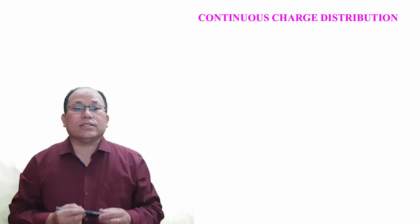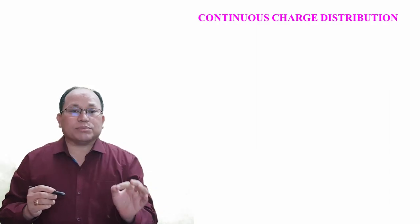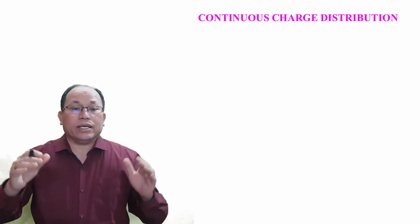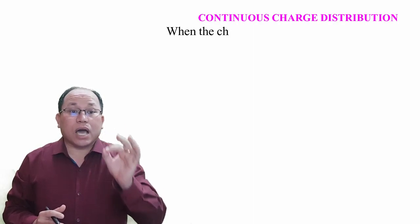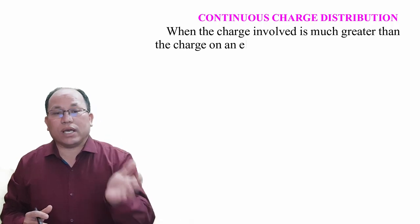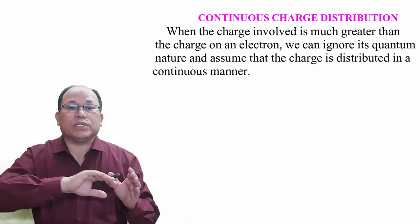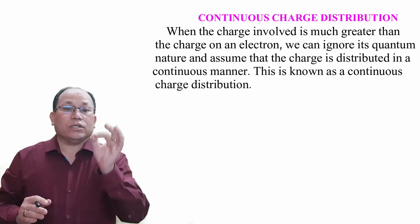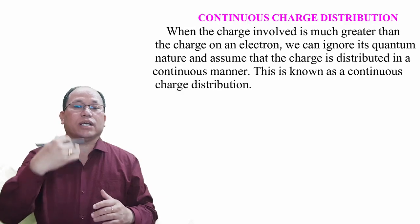Now let's come to the new topic: continuous charge distribution. When charge is transferred between bodies, it occurs via electron transfer, but the charge on an electron is very small. When a large number of charges are transferred, we use the concept of continuous charge distribution — that is, when the charge involved is much greater than the charge on an electron, we can ignore its quantum nature and assume the charge is distributed in a continuous manner.